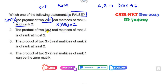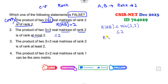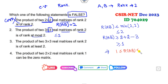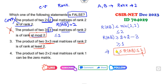Look at the second option: the product of two 3×3 matrices each of rank 2 has rank at most 2. From our inequality, rank(AB) ≤ 2, so 'at most 2' is correct. Look at the third option: the product has rank at least 2. But we showed rank(AB) ≥ 1, not necessarily ≥ 2. He says 'at least 2,' but the correct lower bound is at least 1. So that is the false statement, making this the correct answer.